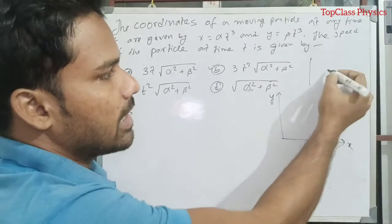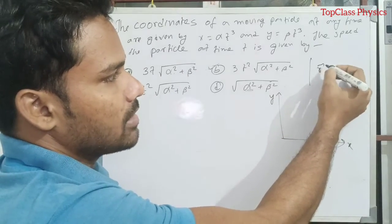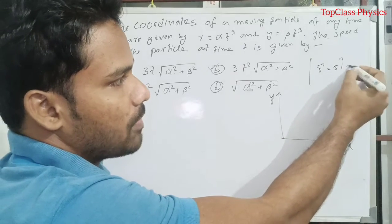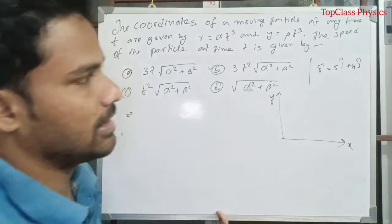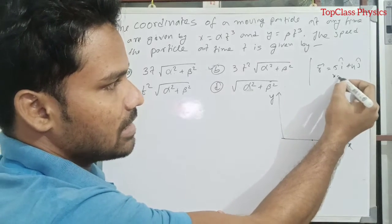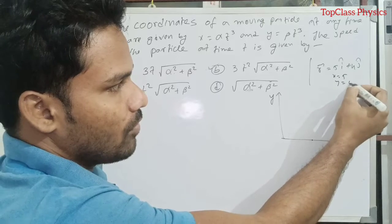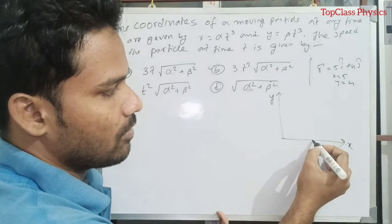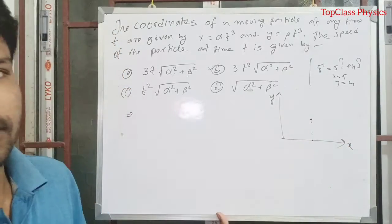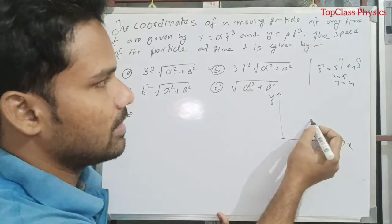Suppose R vector at any position, that is 5i cap plus 4j cap like this. This is 5 means in X axis 5, that means X equals to 5, Y equals to 4. X is 5, Y is 4, so this is our position, the position of the particle.